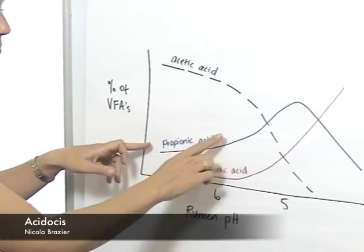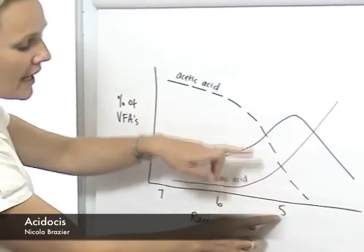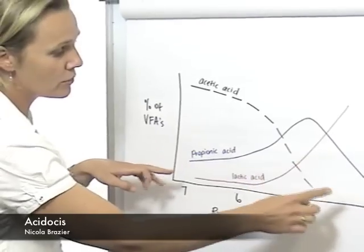Propionic acid will keep being produced, but if pH levels get to 5 or less, those too will drop off.